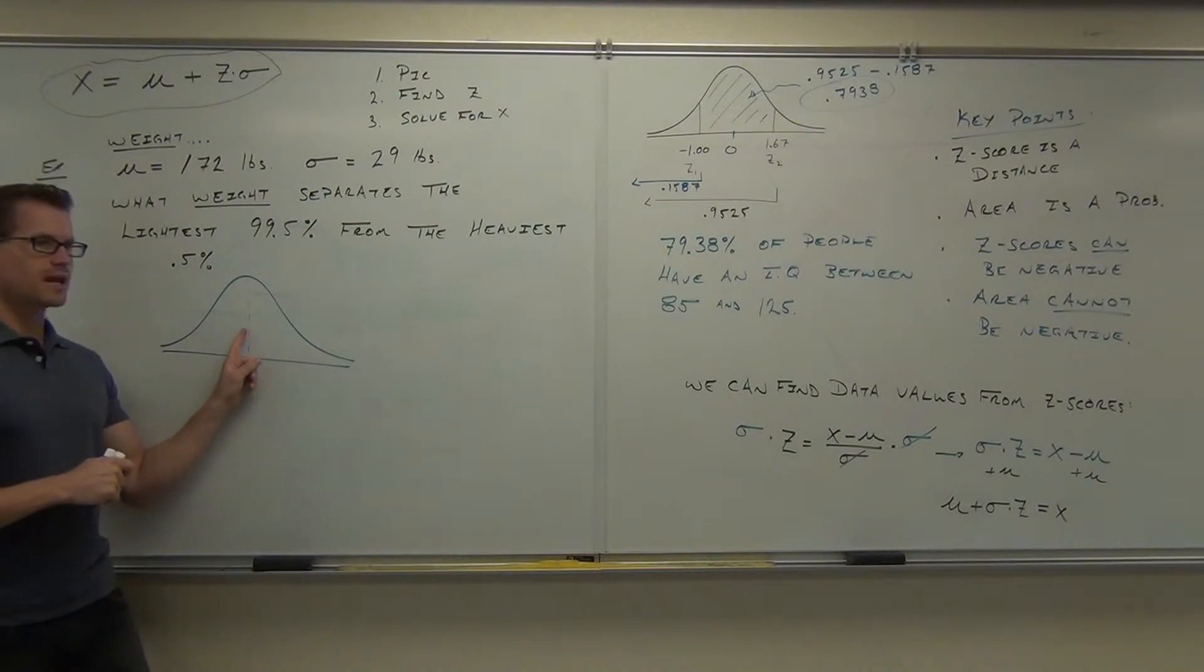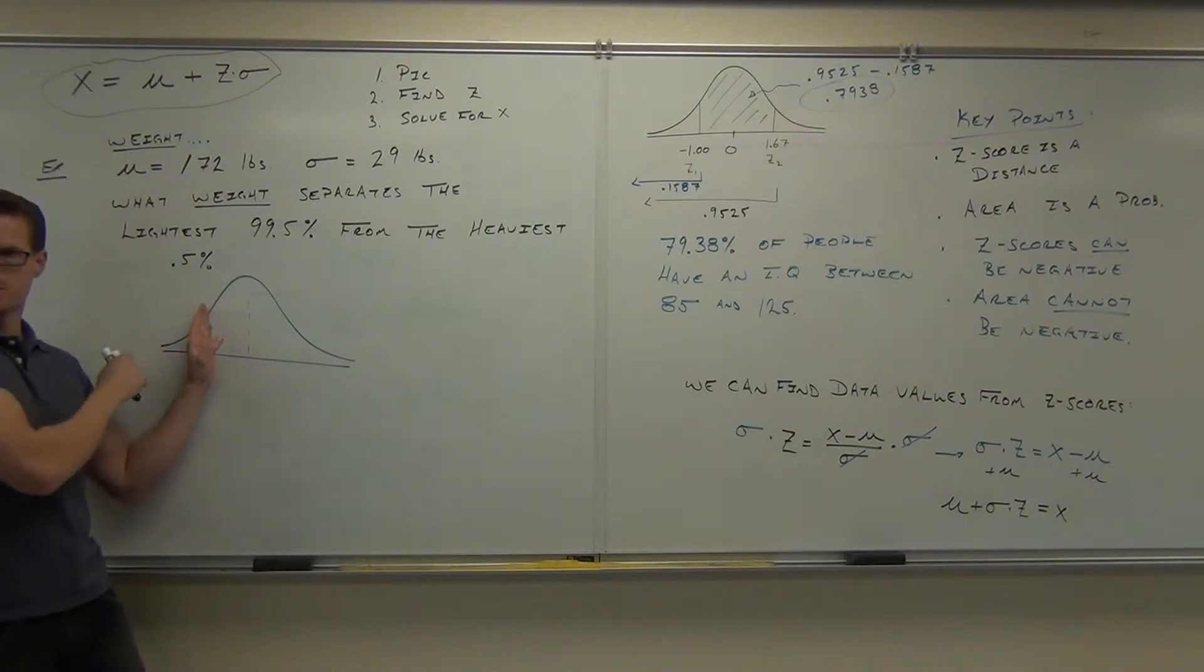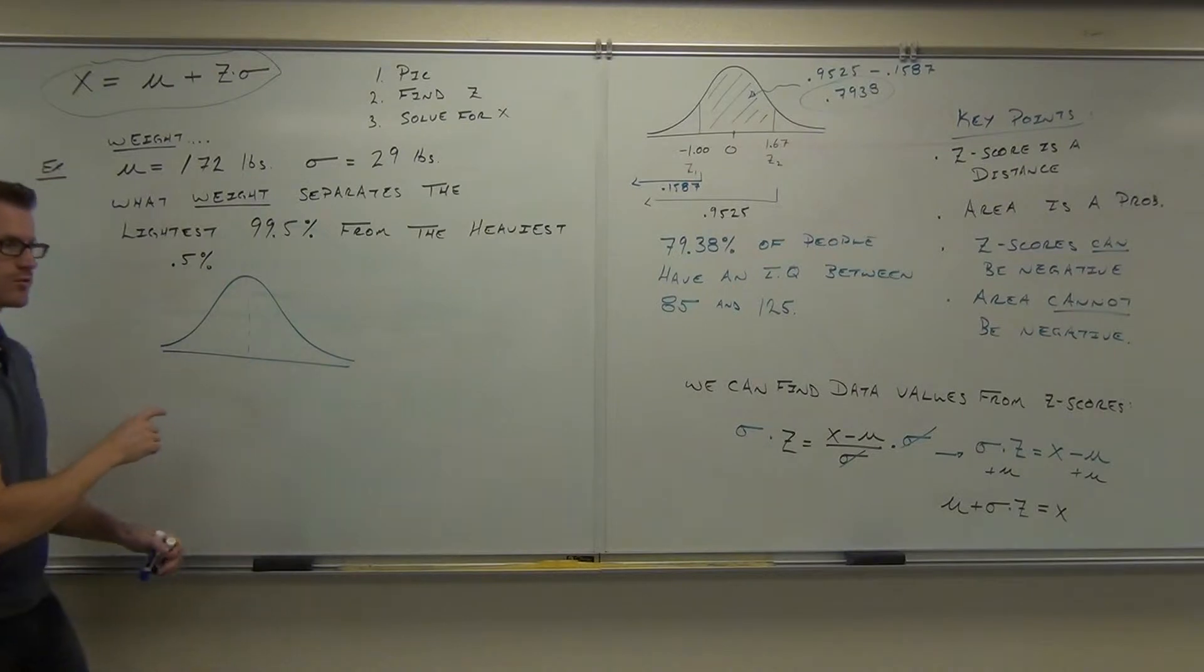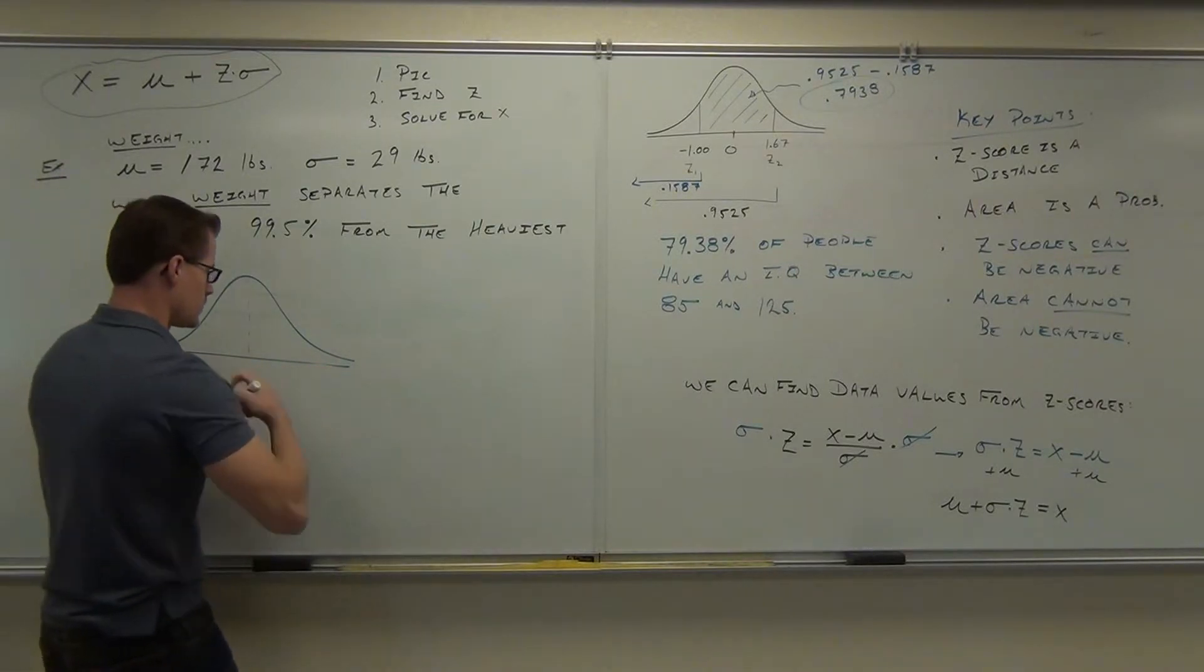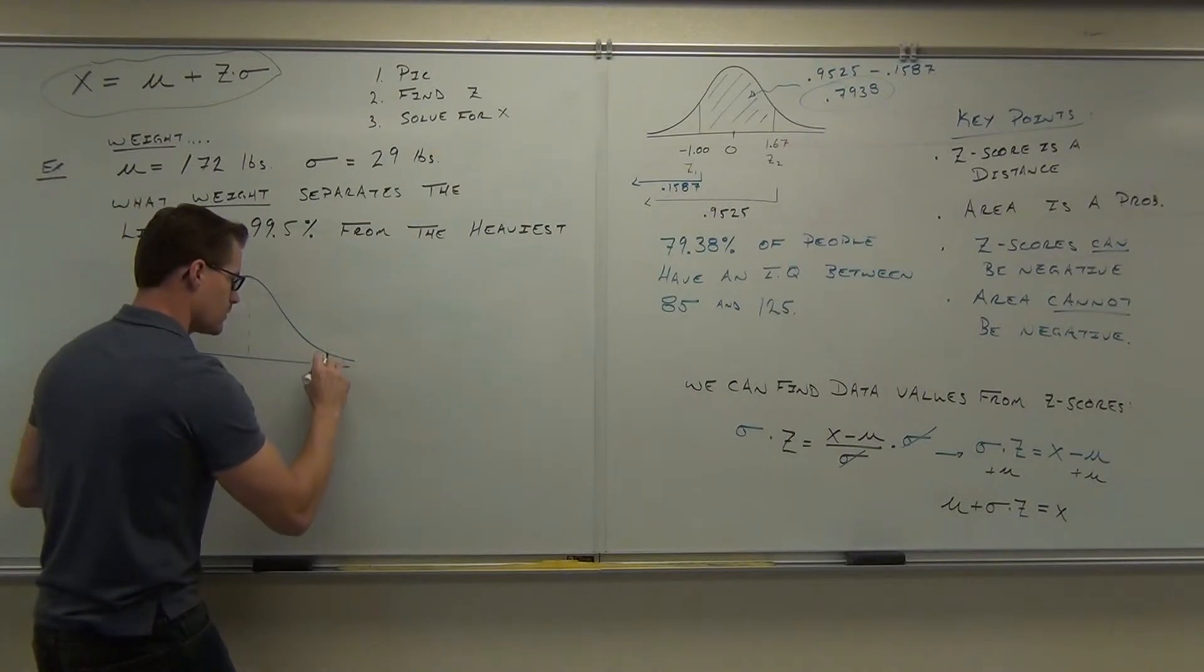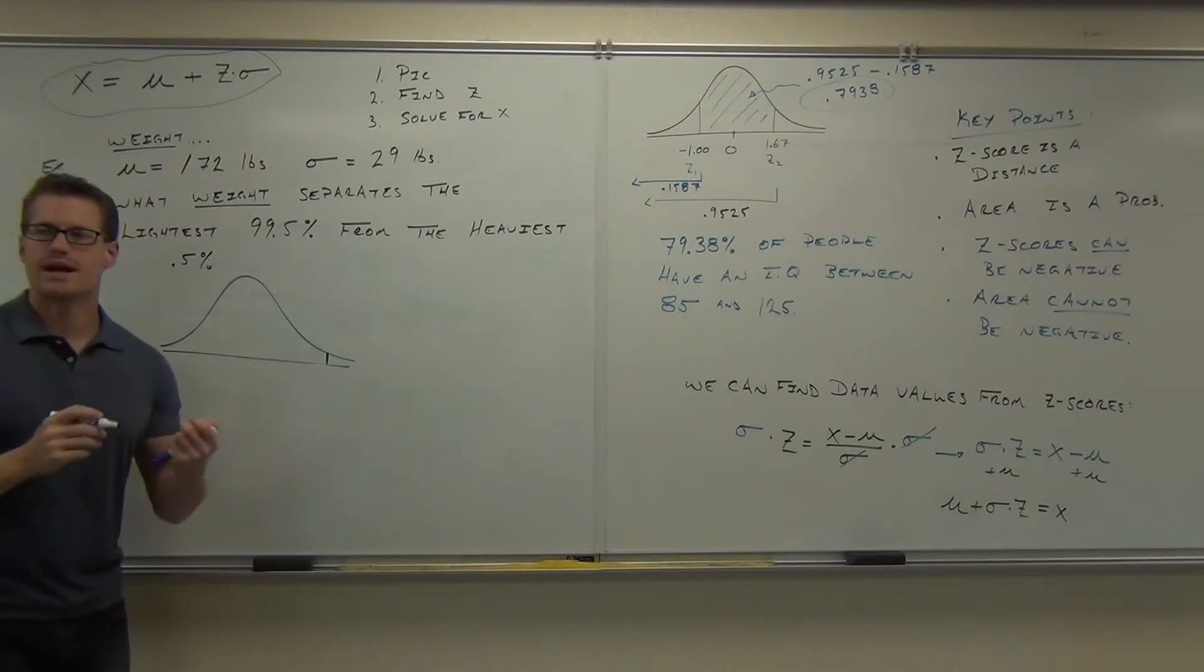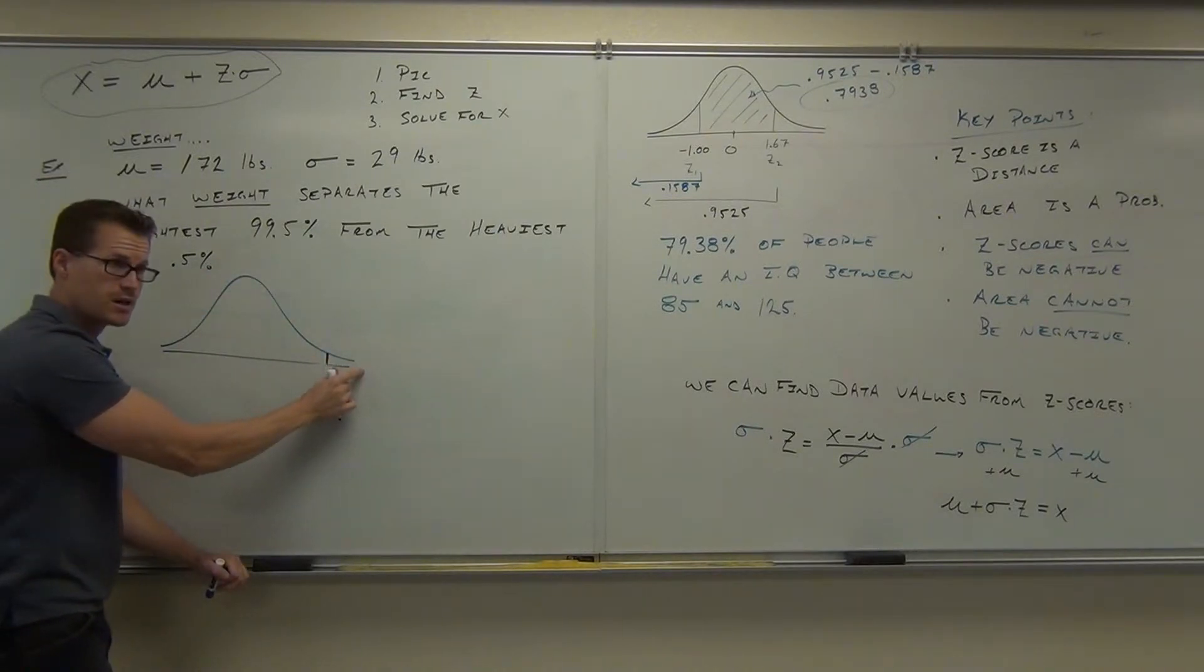Now, we want the lightest 99.5%. Where's the lightest 99.5%? This is the lightest 50%. This would be like the lightest 40%, right? This would be like the lightest 10%. Are you with me still? This would be like the lightest 60%. Where do I need to put my line for the lightest 99.5%? You stop me when I'm there. Okay, so we're way over here. I'm going to erase that. That was our 50% mark.